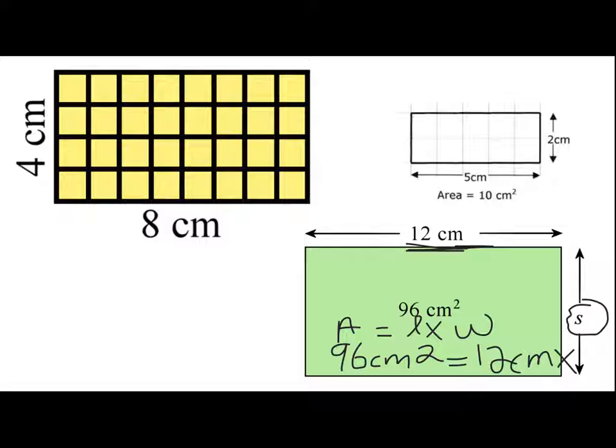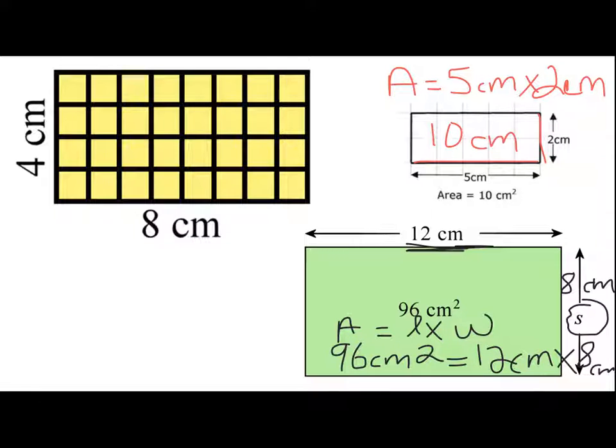12 times 10, that's too high. That would be 120. I think it's going to be 12 times 8 centimeters. So S is really 8 centimeters. That was our missing length. And here we have a length of 5 and a width of 2. So we know that area is length times width. So it's 5 centimeters times 2 centimeters. And we end up with our area being 10 centimeters squared.